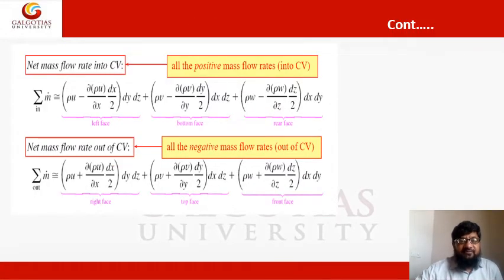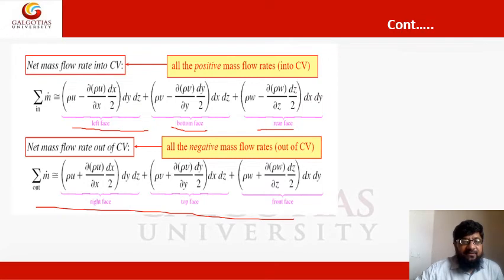From the left face, the flow is entering and we can calculate the m dot, that is mass flow rate, by rho u into elemental area, and similarly on the bottom face and the rear face. And by Taylor series, we can calculate the mass exiting at the right, top, and front face.